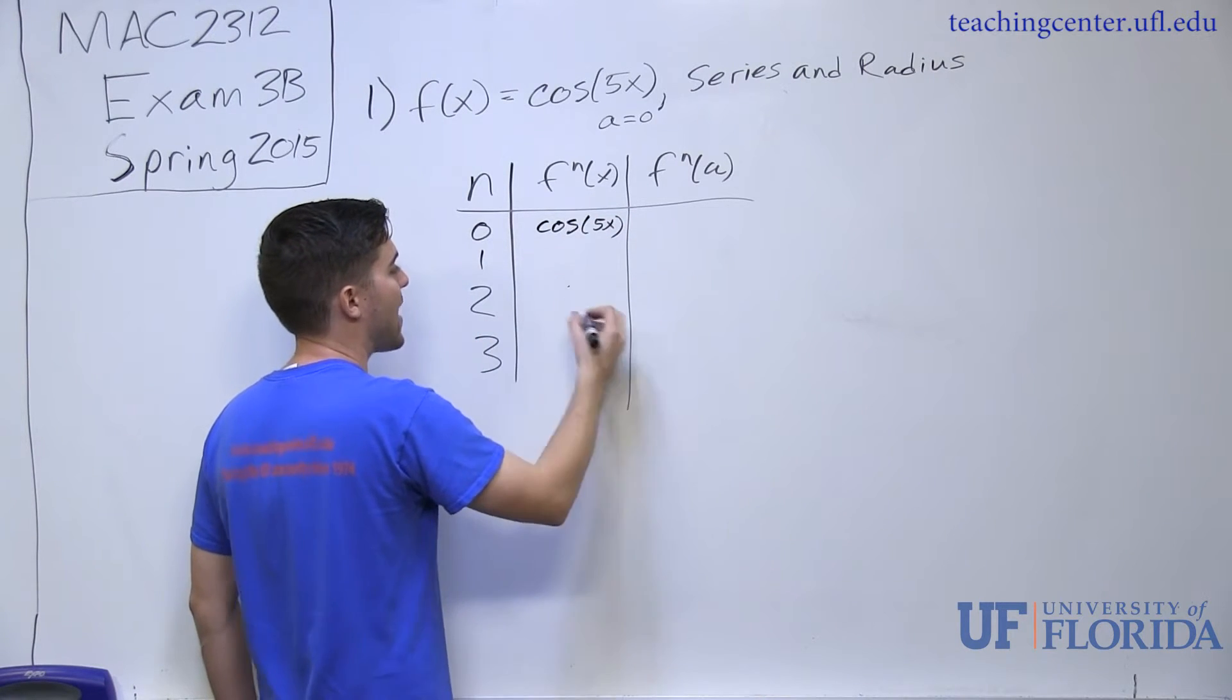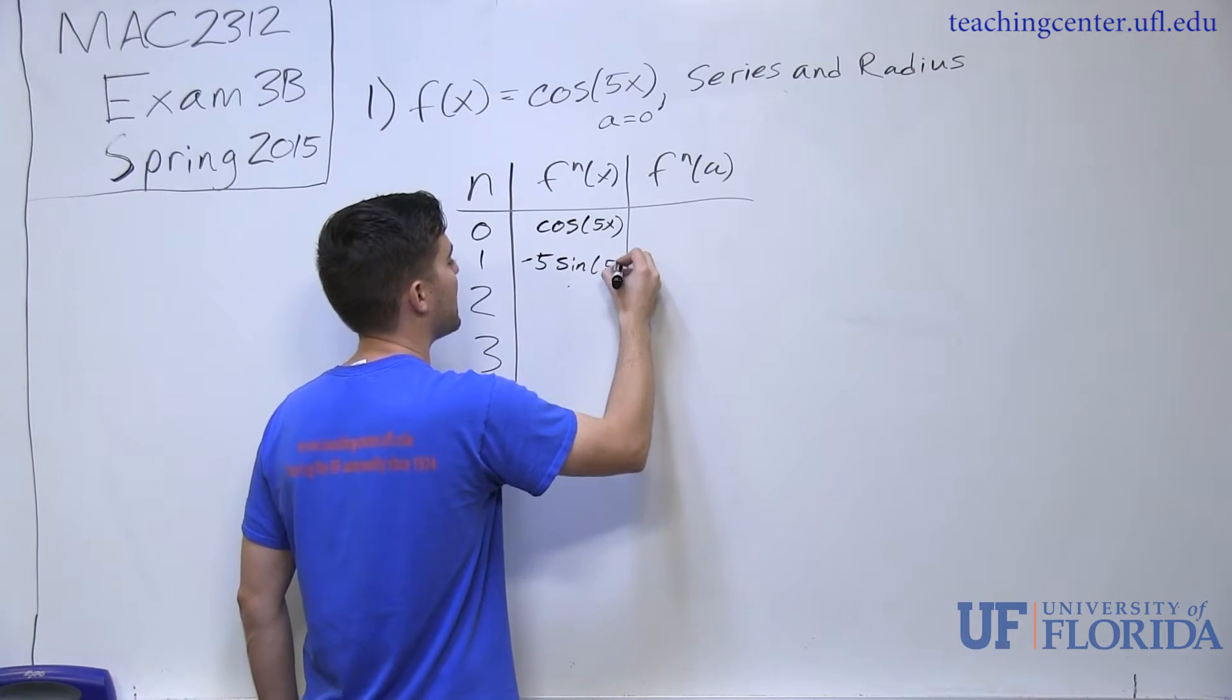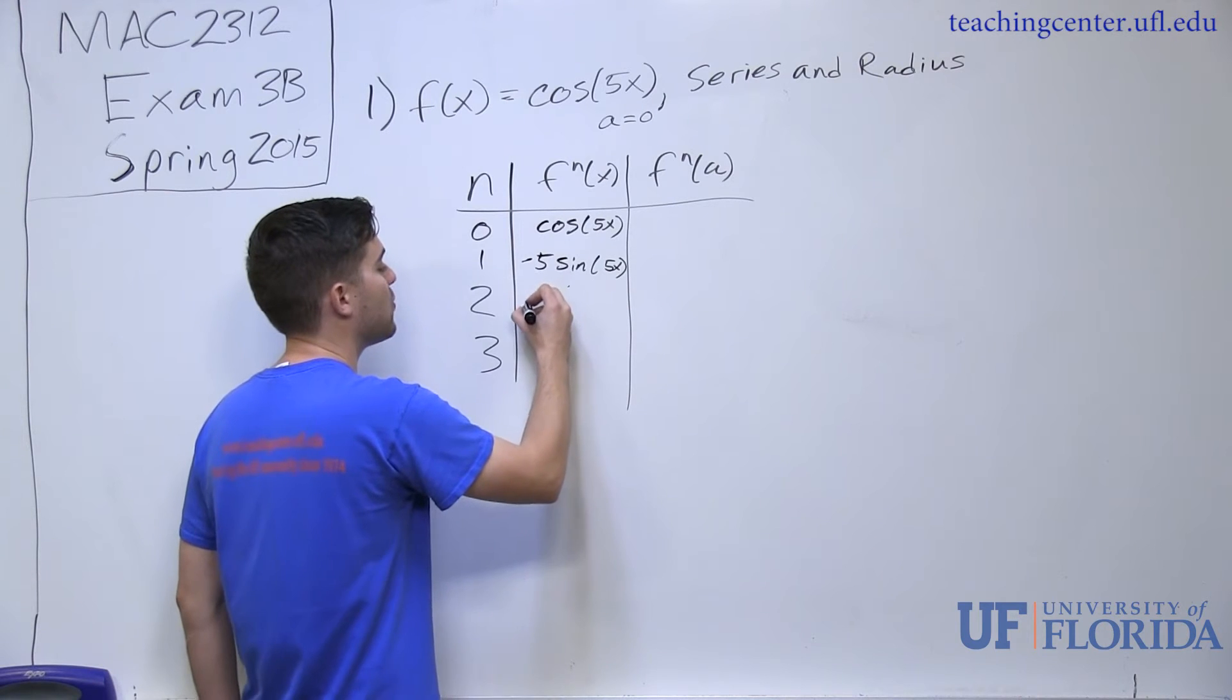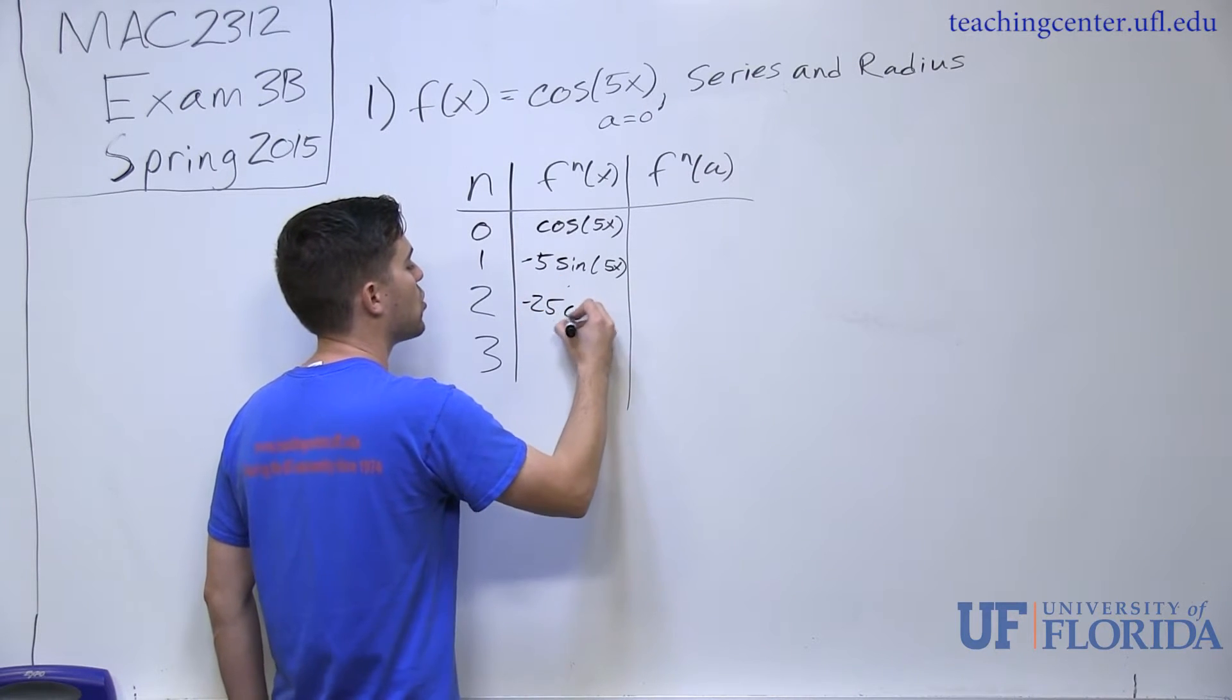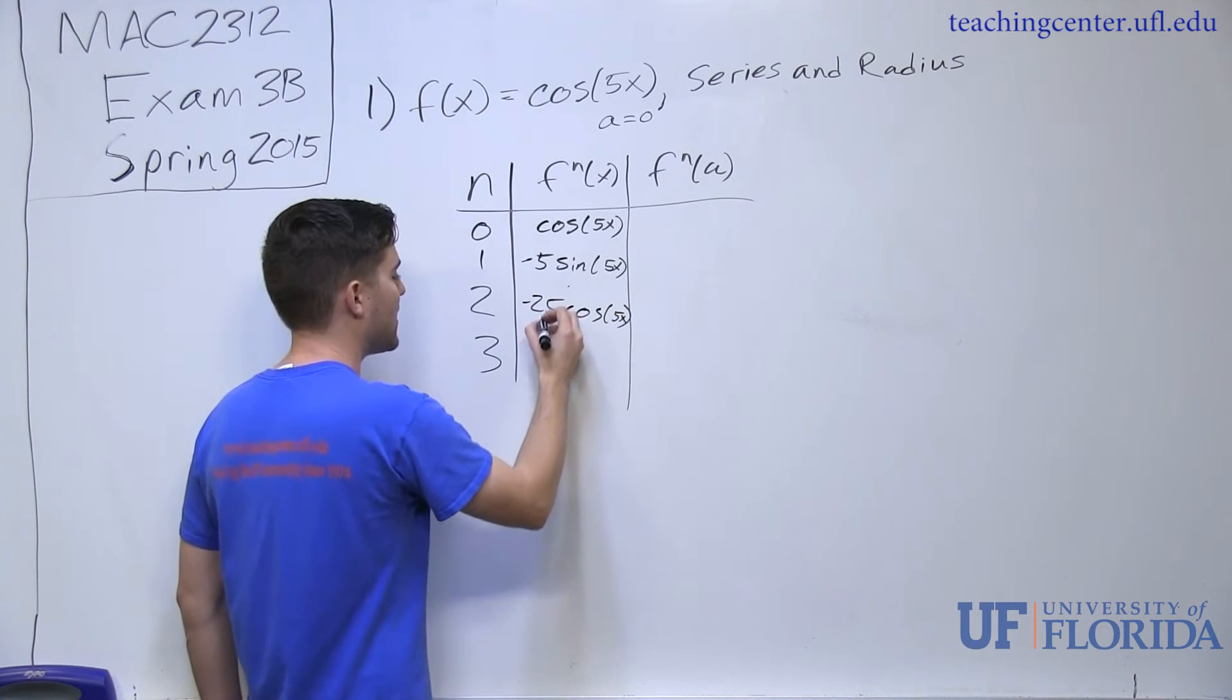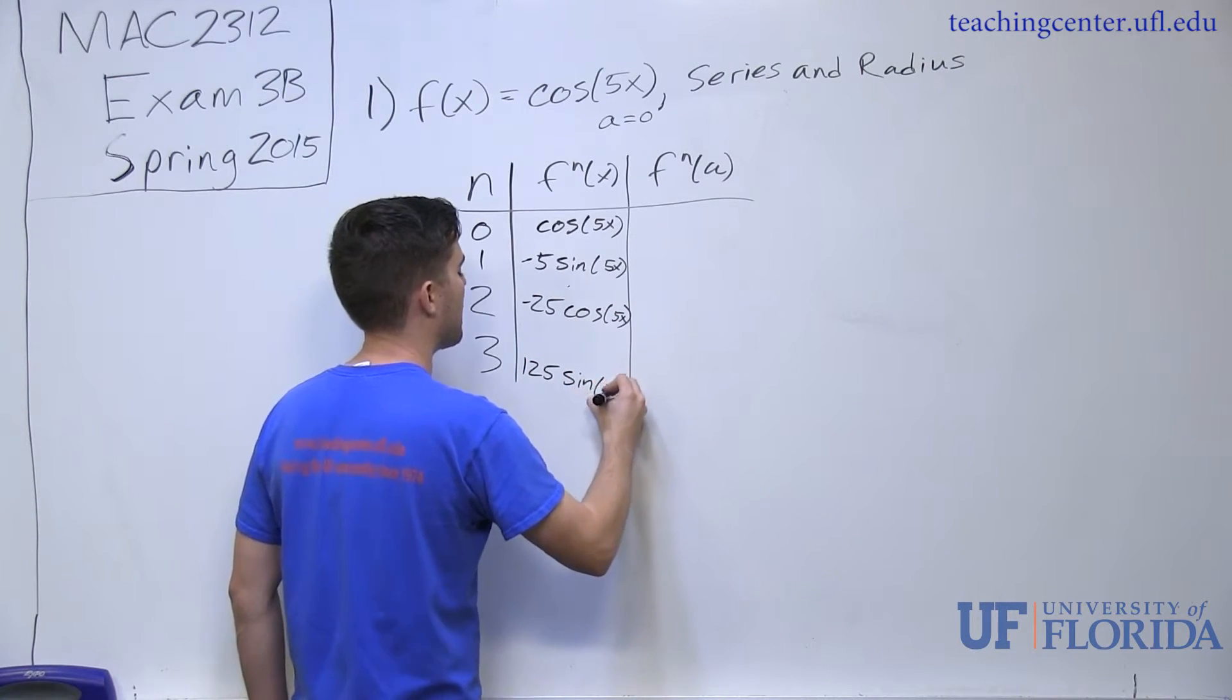I take the derivative of that, I end up with negative 5 sine of 5x. If I take the derivative of that again, I end up with negative 25 cosine of 5x. And then, I end up with 125 sine of 5x.